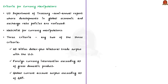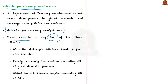The US Department of the Treasury publishes a semi-annual report reviewing global economic and exchange rate policy developments, which includes the currency manipulator watch list. The Treasury uses three criteria: first, a $20 billion-plus bilateral trade surplus with the US; second, foreign currency intervention exceeding 2% of GDP; and third, a global current account surplus exceeding 2% of GDP. If a country meets any two of the three criteria, it is placed on the watch list.